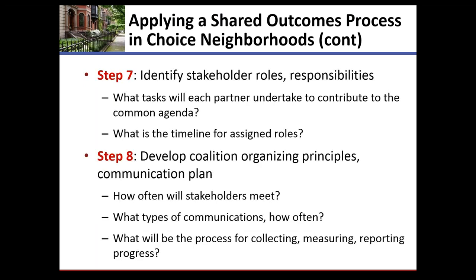Once goals and indicators are figured out, the next step is to determine who's going to do what. Who is going to be responsible for which goals and which indicators? Who is going to agree to help collect the data? Who is going to provide data to whom? What are the roles and what's the timeline? You need a very explicit assignment of who's going to do what, and everyone must agree on their respective roles and how they're going to collaborate together toward those shared outcomes.